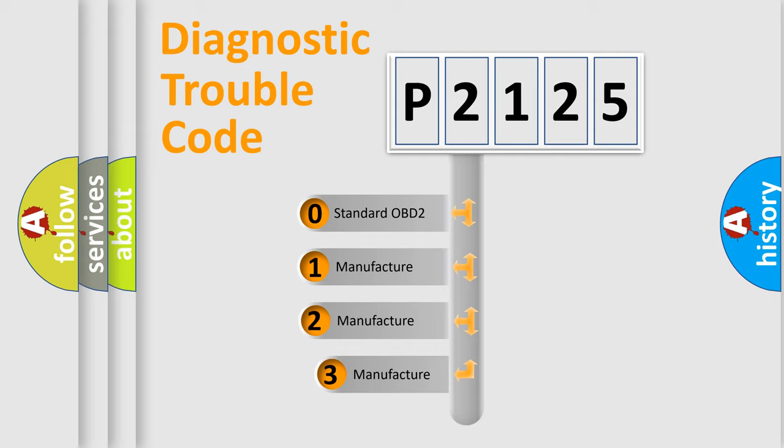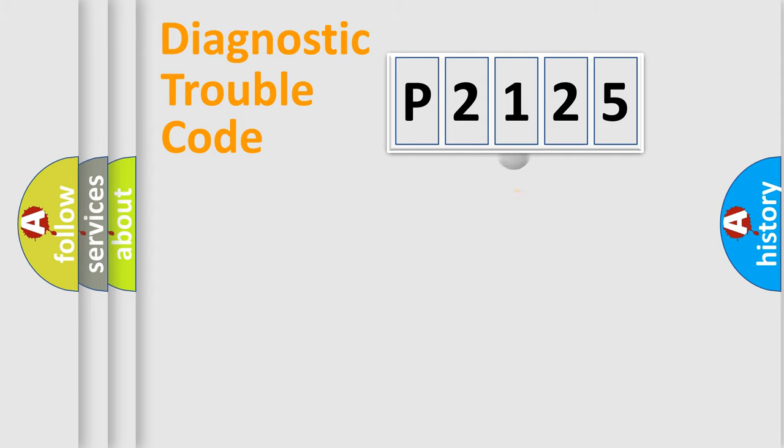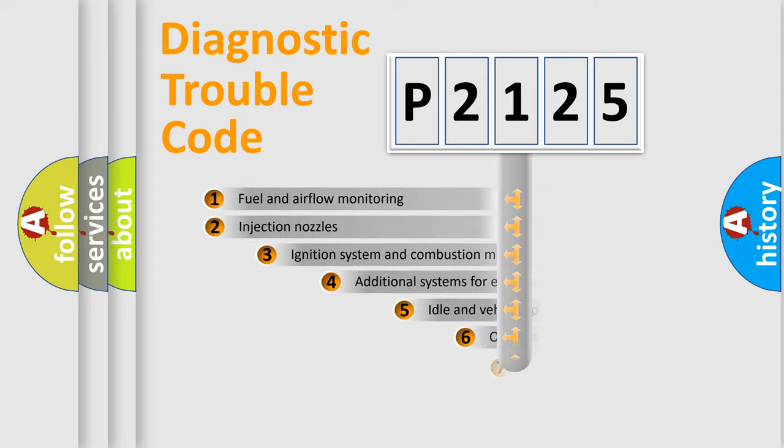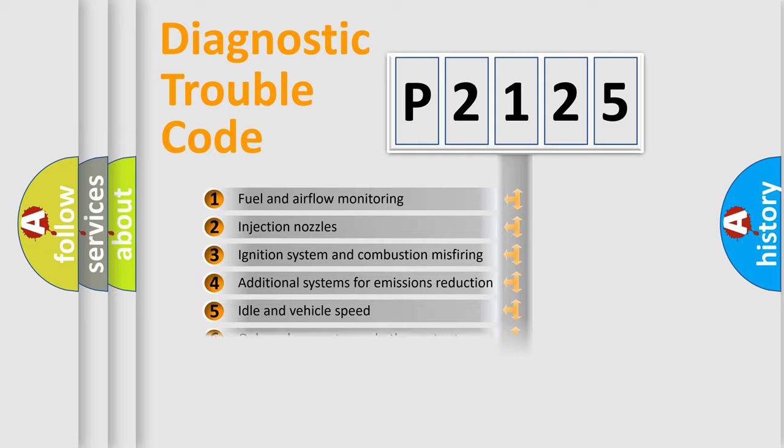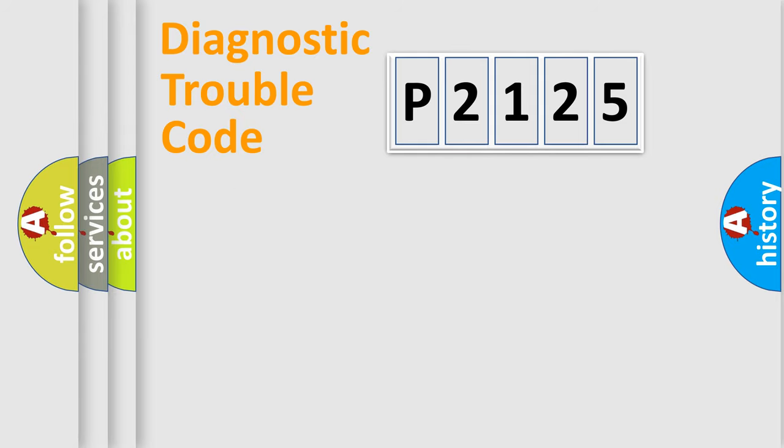If the second character is expressed as zero, it is a standardized error. In the case of numbers 1, 2, or 3, it is a manufacturer-specific expression of the car specific error. The third character specifies a subset of errors. The distribution shown is valid only for the standardized DTC code.